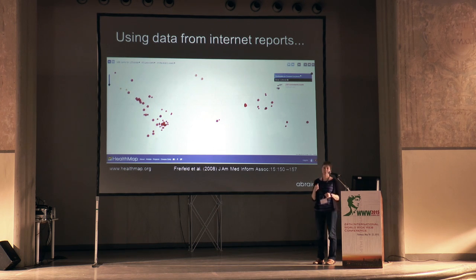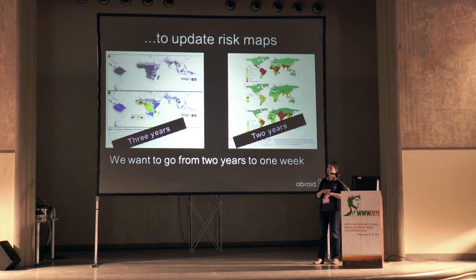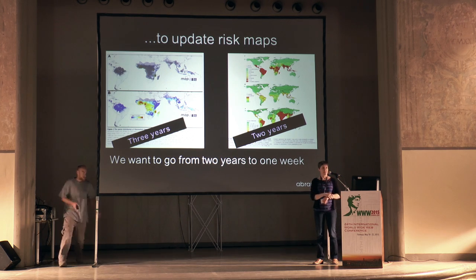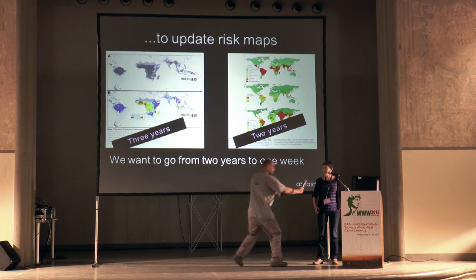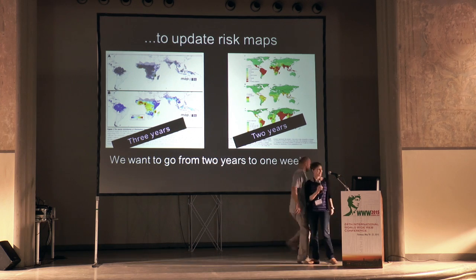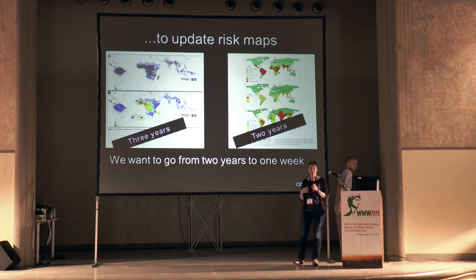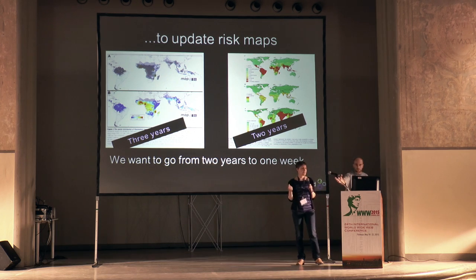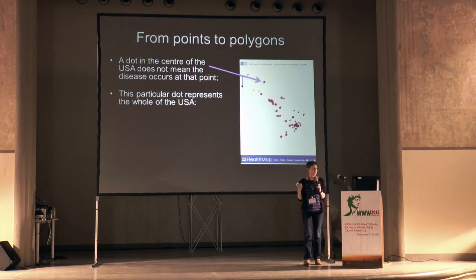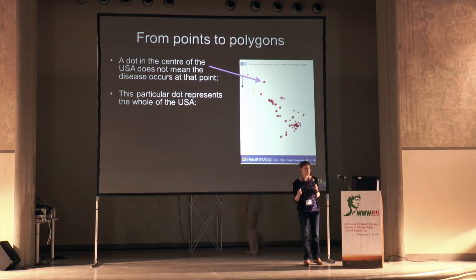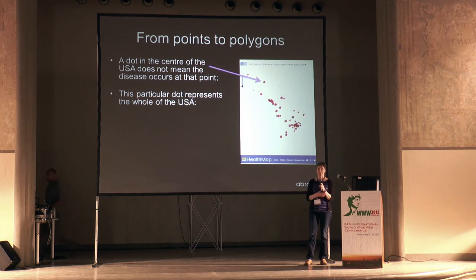On the next slide we have two examples of this: a map of malaria prevalence and a map of predicted dengue occurrence. It took us two to three years to collate the data for these two maps, but we want to bring that process down to two to three weeks.